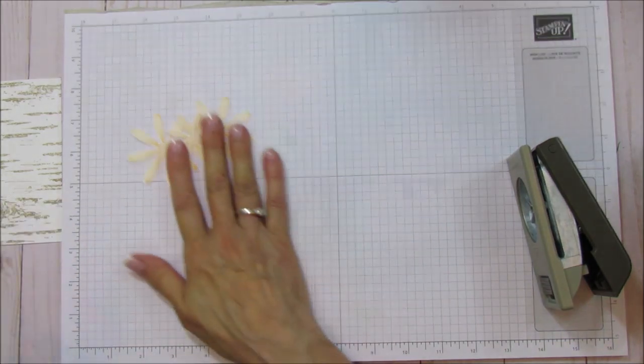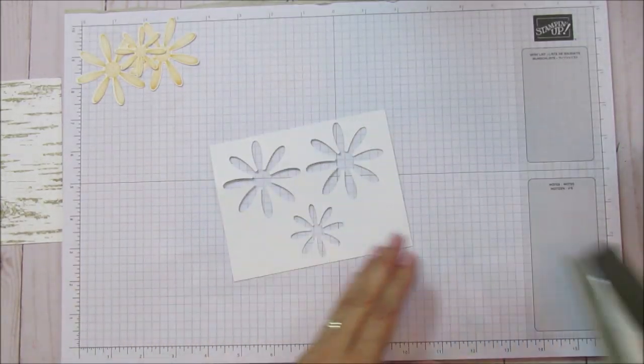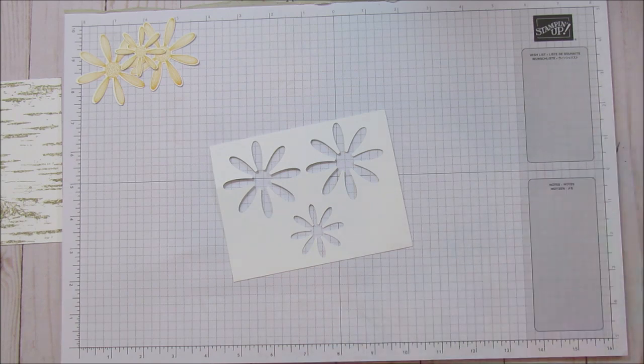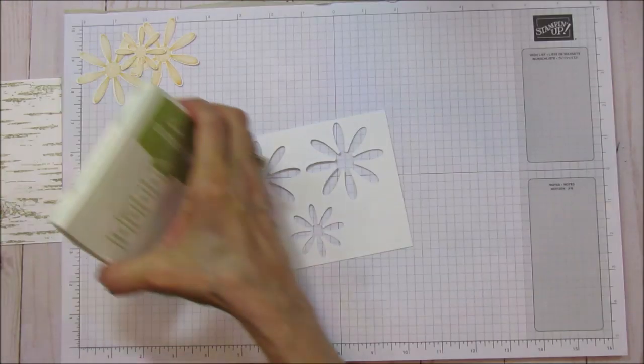Make sure I got these all lined up really good. And then we'll use our medium daisy punch for our little one here. Alright. Let me see if I have enough room on here for my leaves. I think I probably will.